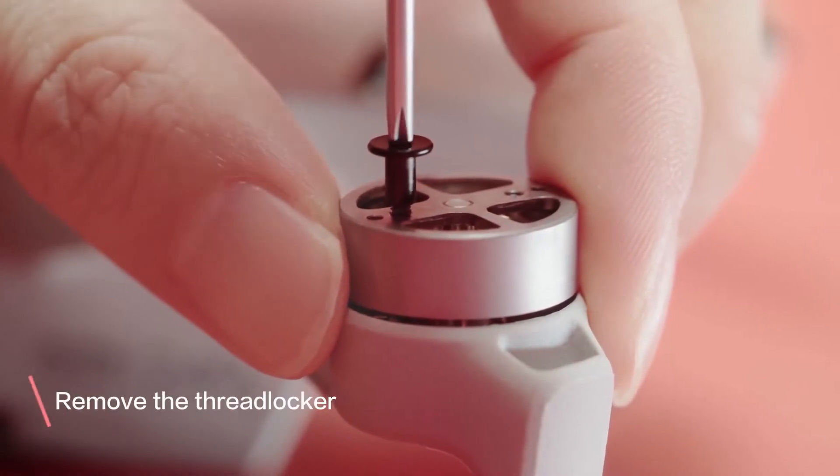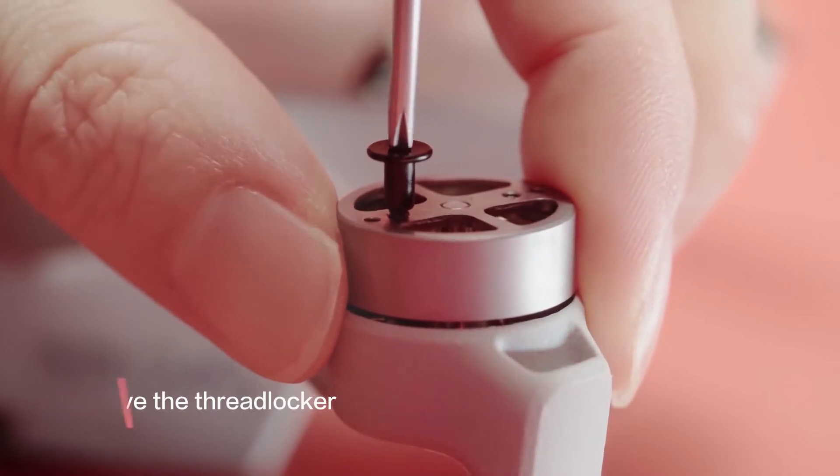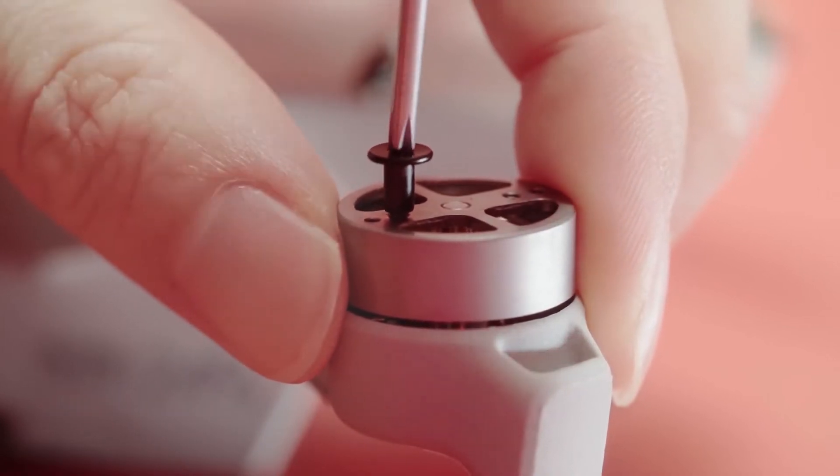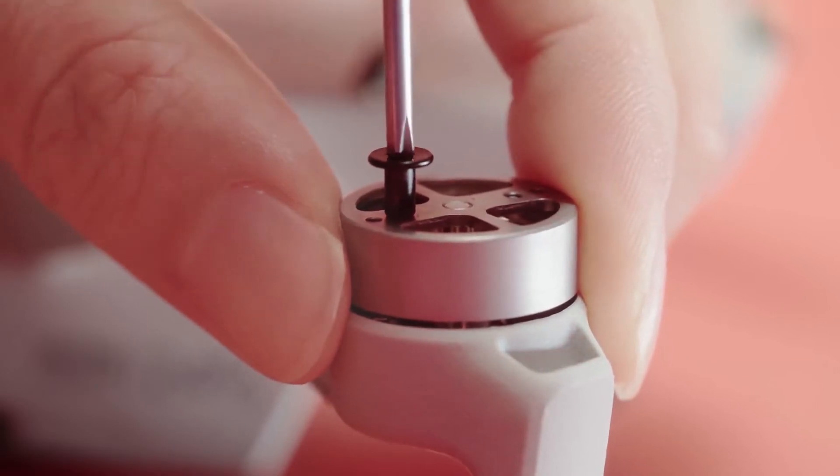Before attaching the new propellers, remove the blue thread locker in the screw hole. You can screw the old screws in and out multiple times to clean the screw hole.